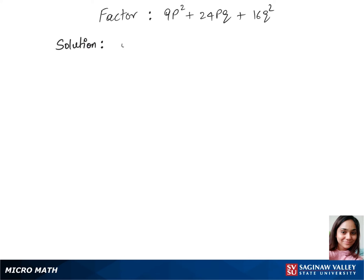Let's factorize this trinomial. We'll first find factors for 9p square. So that's 3p times 3p, and we also have 9p times p.